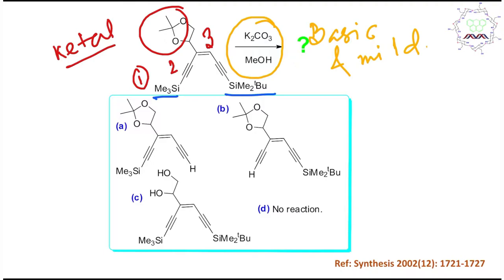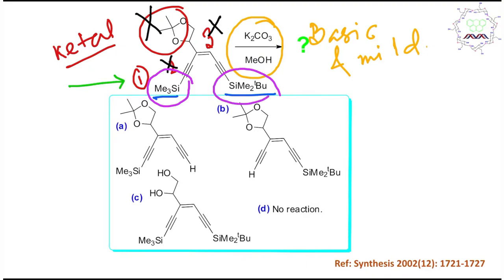From basic chemistry, we know ketals are stable in base — so that option is gone. Alkene and alkyne don't react with mild base like K₂CO₃/MeOH — gone. The alkene is not attached to any electron-withdrawing group — gone. So whatever is left is the silyl protection, and that is actually reacting. Now the competition is: will the TMS be deprotected, or the tert-butyldimethylsilyl (TBDMS)? That is the question.